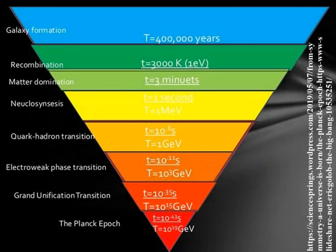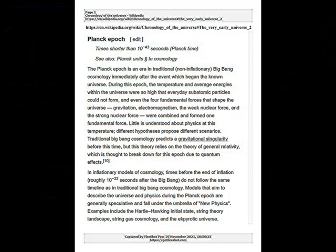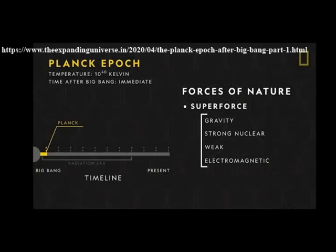As previously discussed, the Planck epoch, or Planck time, took place at 10 to the minus 43 seconds after the event which began the known universe. During the Planck epoch, the temperature and average energies within the universe were so high that subatomic particles could not form. Even the four fundamental forces — gravitation, electromagnetism, the weak nuclear force, and the strong nuclear force — were combined and formed one fundamental force. Little is understood about physics at this temperature. Different hypotheses propose different scenarios. Traditional Big Bang cosmology predicts a gravitational singularity before this time, but this theory relies on general relativity, which is thought to break down for this epoch due to quantum effects.